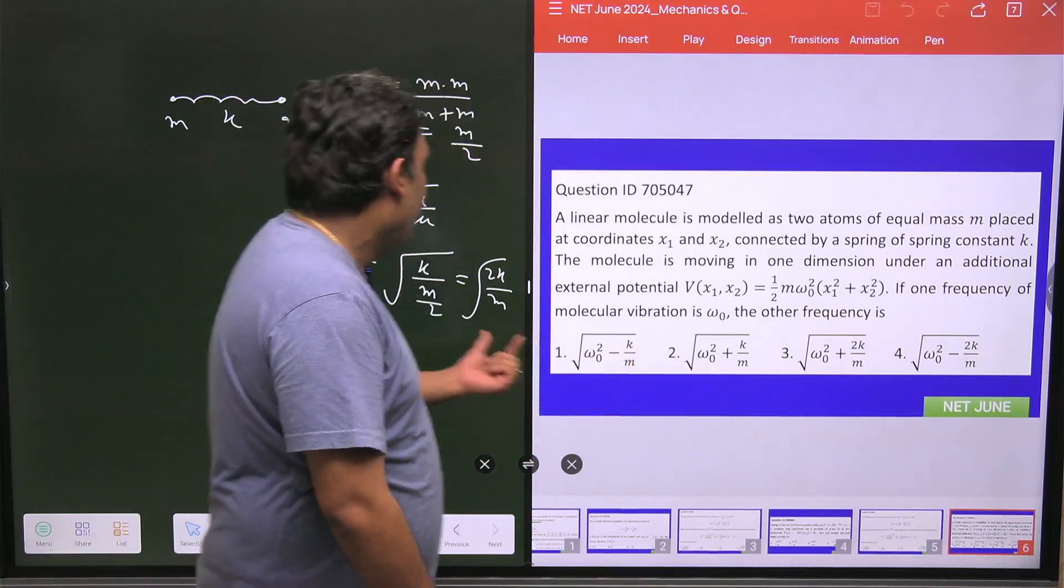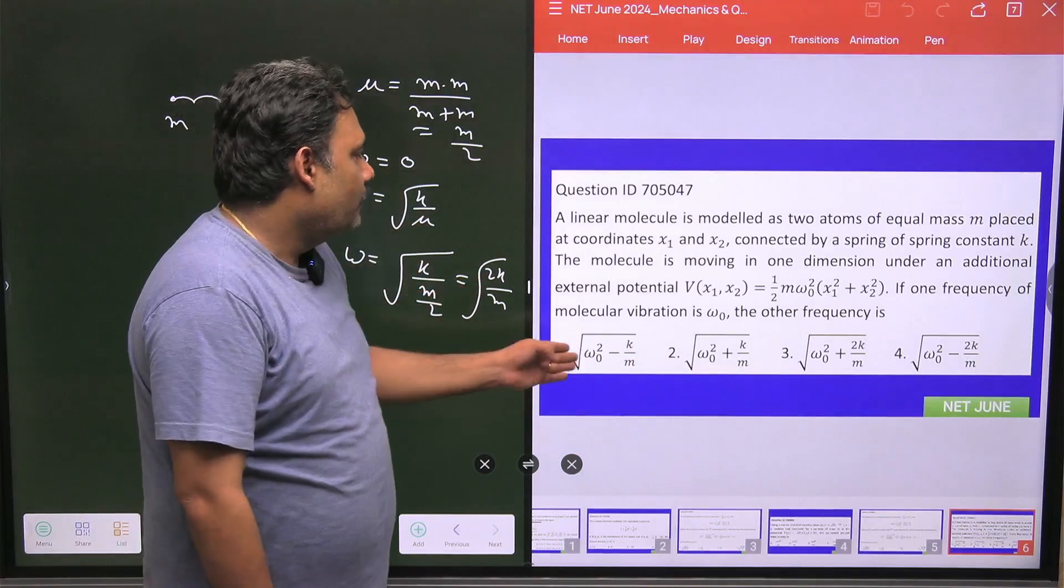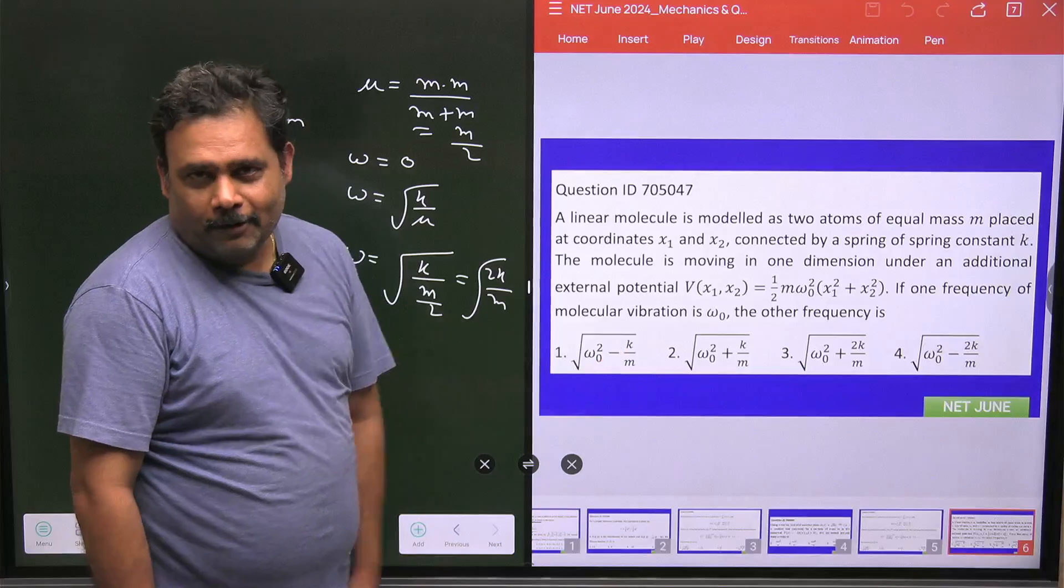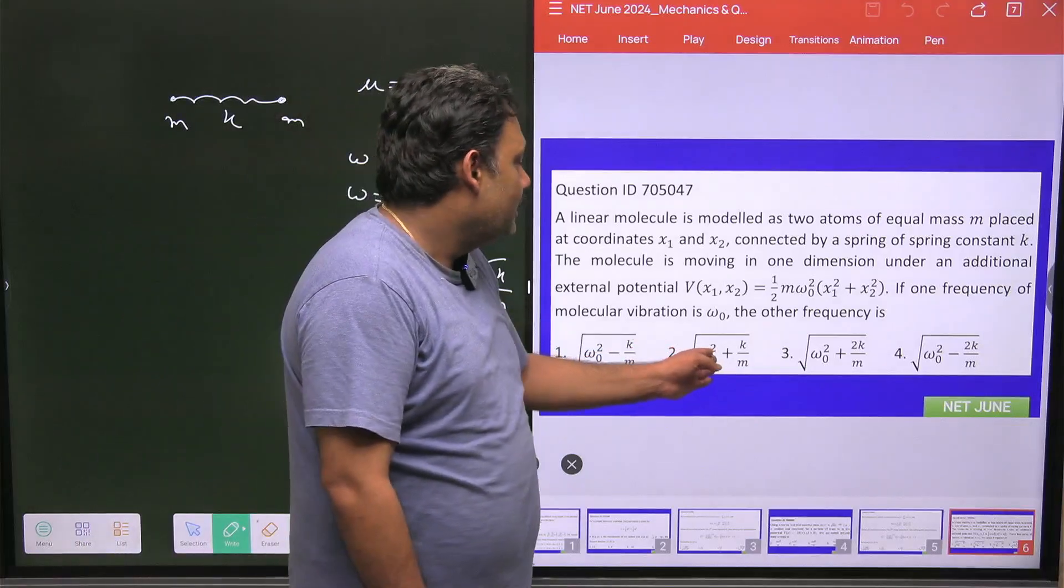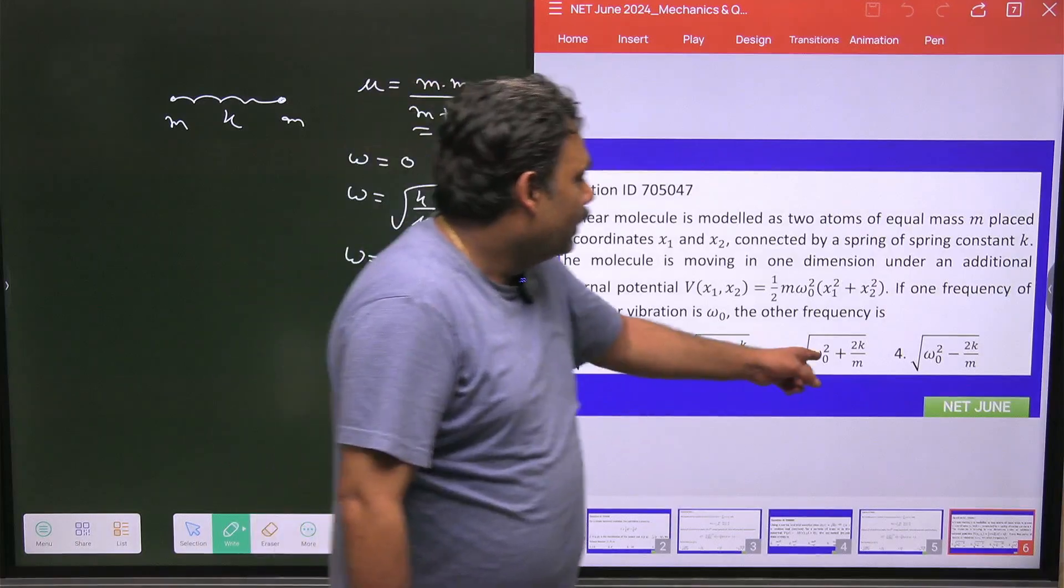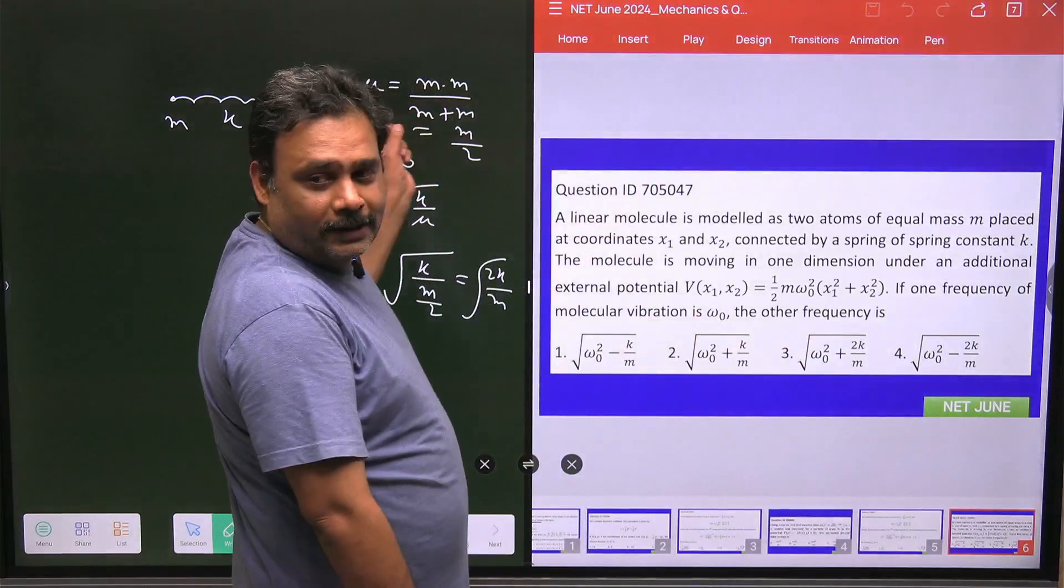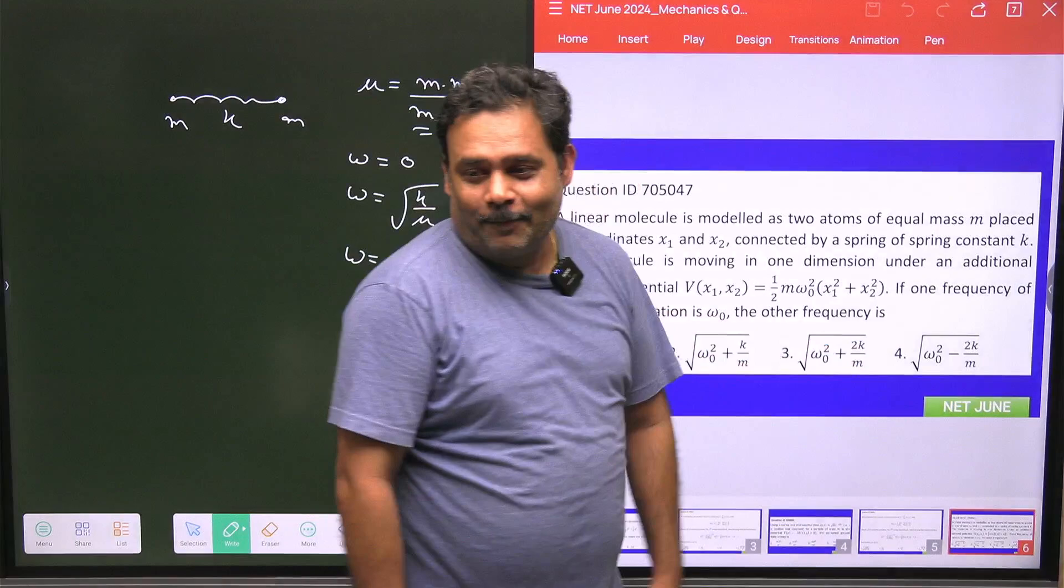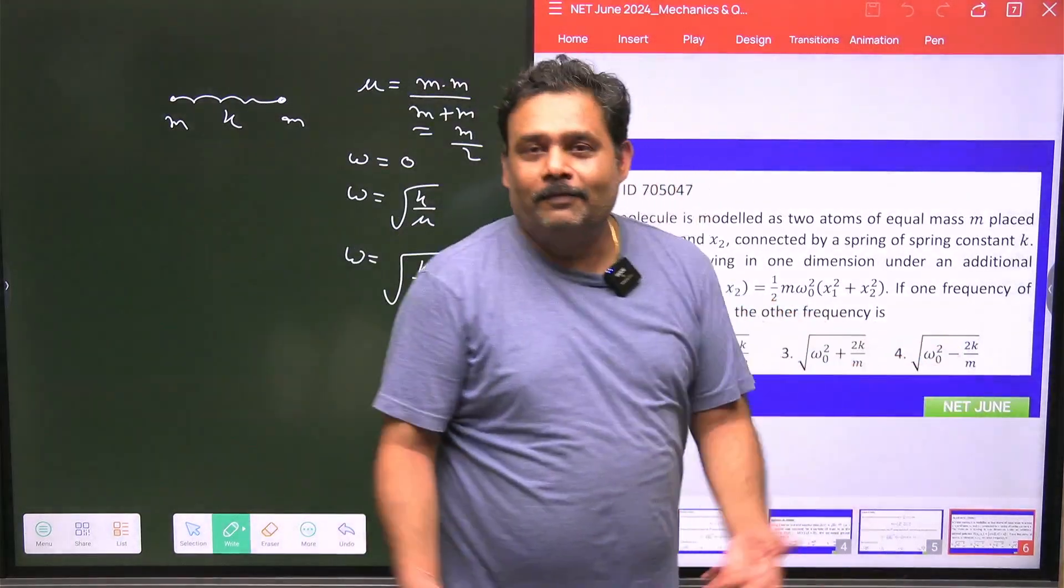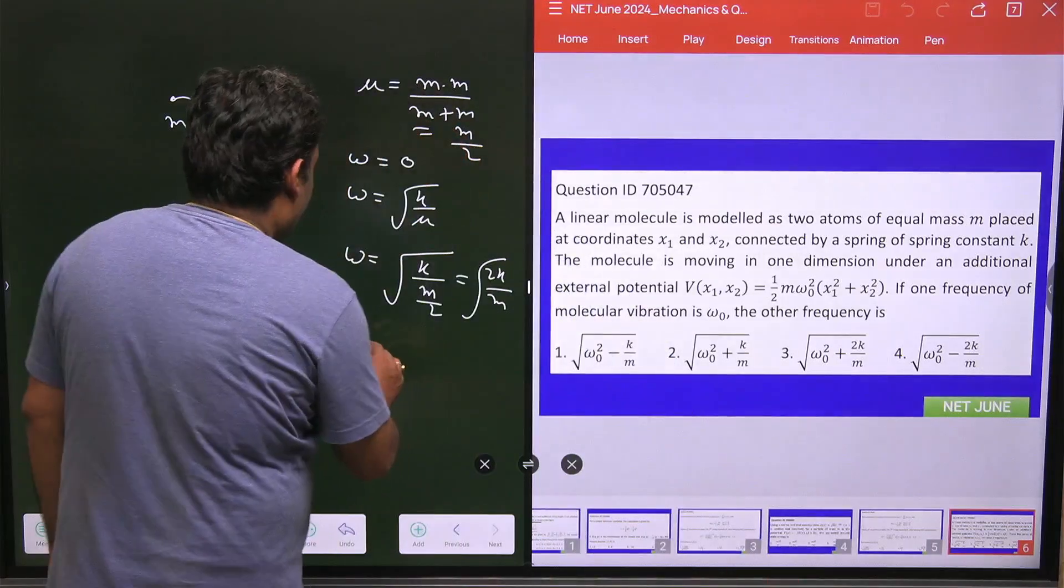So one will be 0 and another is √(K/M). First is √(-K/M), that is not going to happen. Second is √(ω₀² + K/M), this is also not going to happen. Third is √(ω₀² + 2K/m). If I put ω₀ = 0, then I will land onto this system and that value is √(2K/M). The fourth has negative, which cannot be possible. So what will be your answer? Your answer is 3.